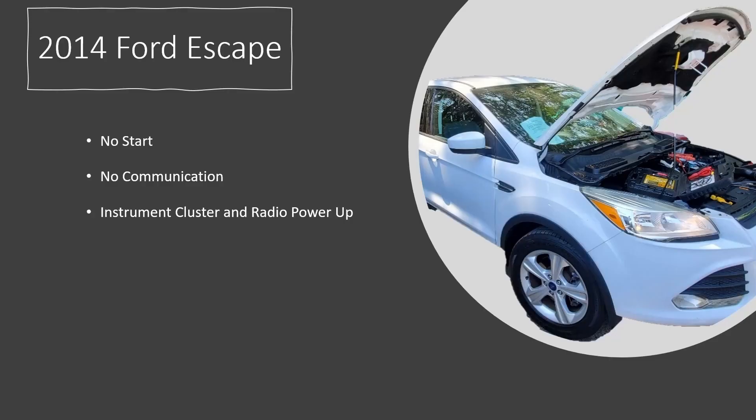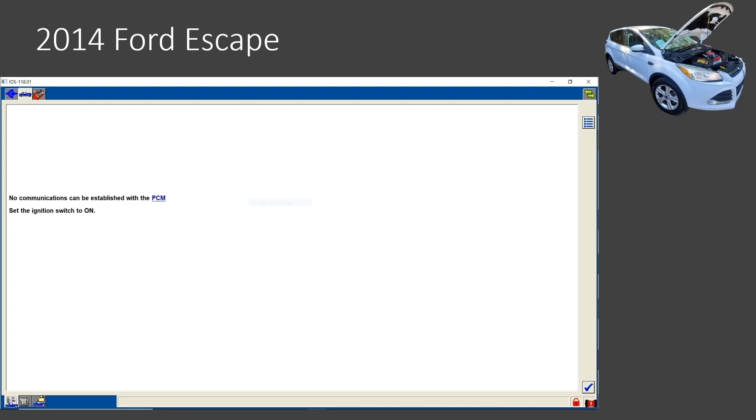I accidentally left my Snap-on and Autel at home this day, so I used the IDS on this vehicle. I'm making an effort to use Snap-on or Autel for case studies since those are the scanners that most shops and techs have. There's no communication with the PCM, so the system will not self-identify. I need to get the PCM part number or tear tag to start a manual session.